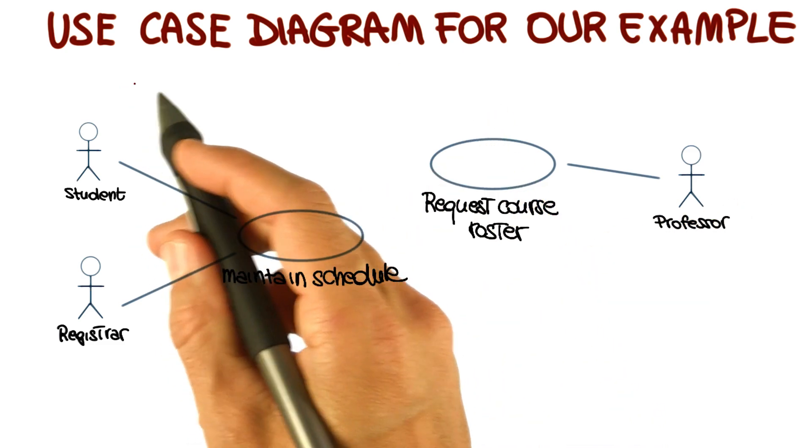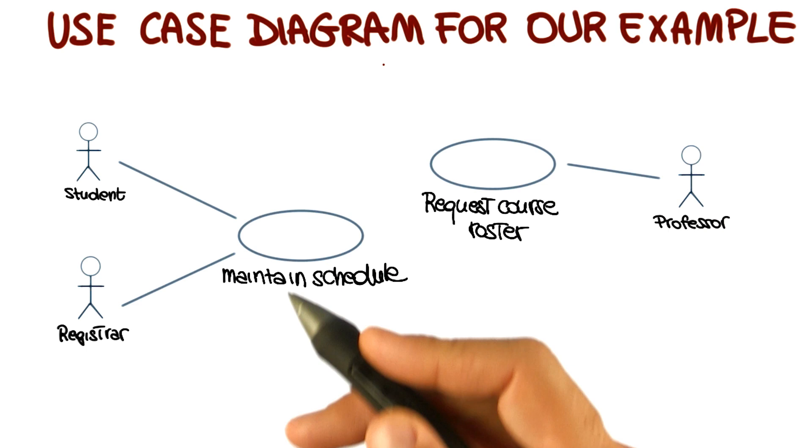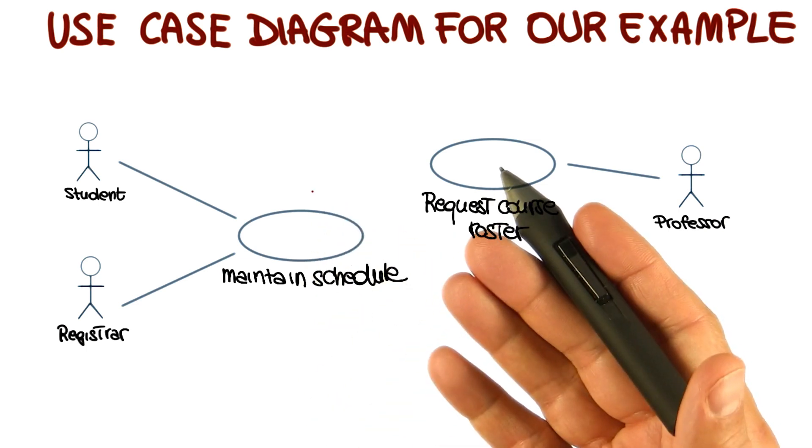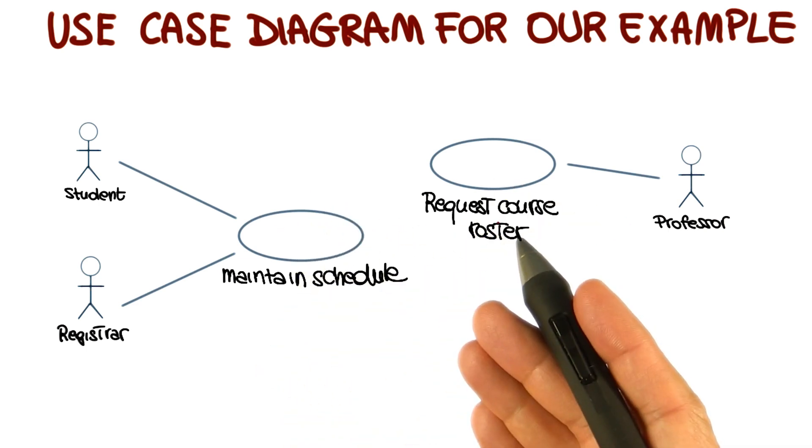So in summary, what the use case diagram is doing is to show the actors and their interaction with the system through a set of use cases.